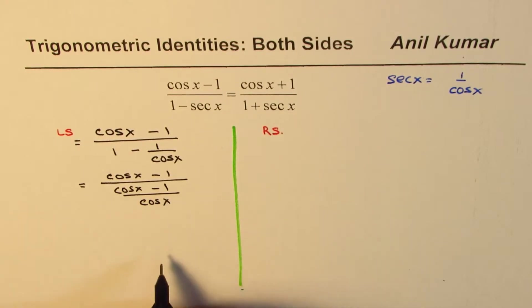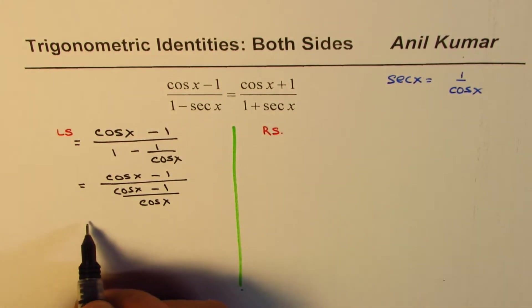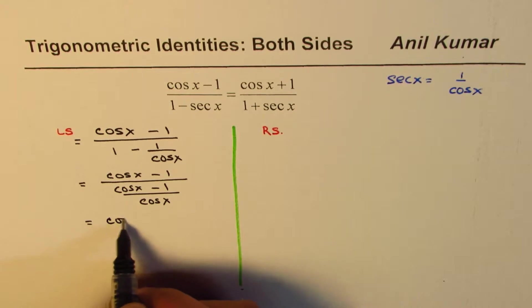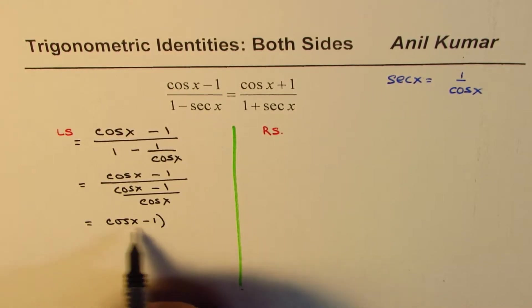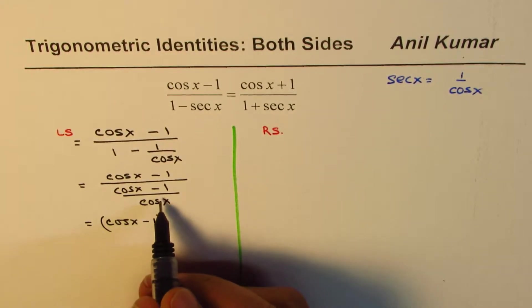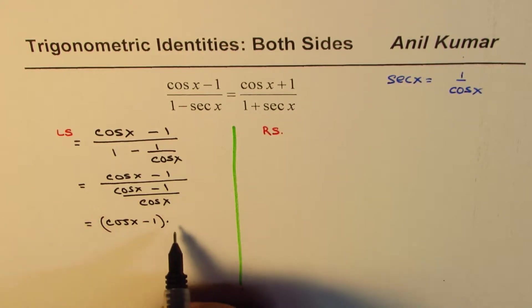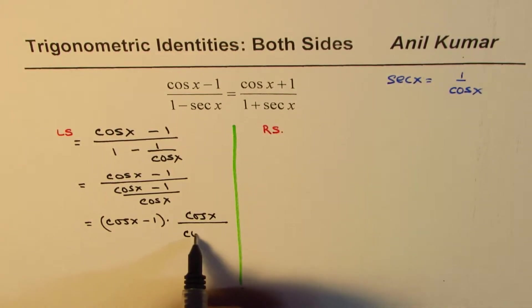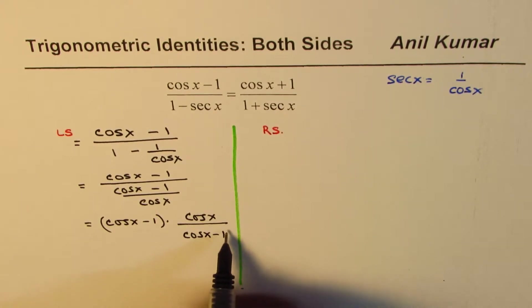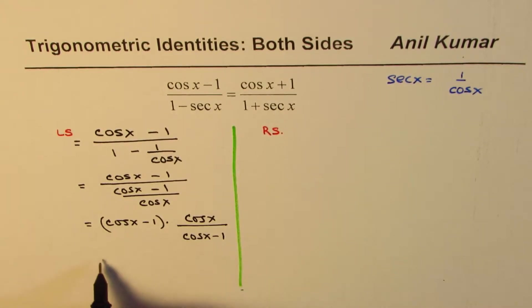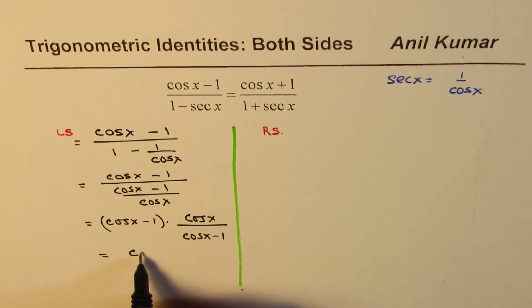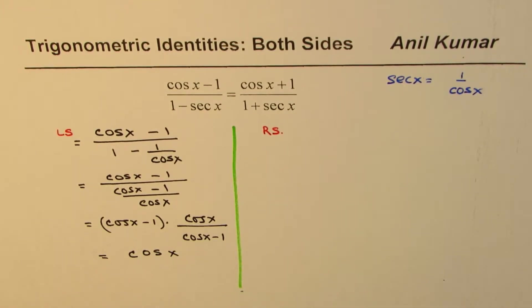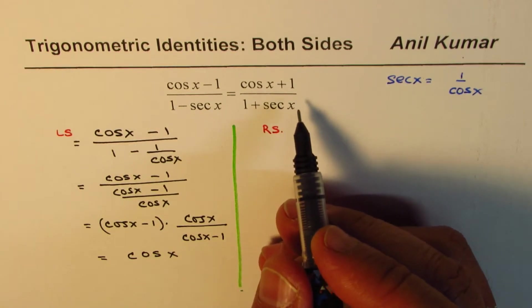At this stage, you could also write this as (cos x - 1) times - it's divided by this, so it flips - cos x/(cos x - 1). They get cancelled, and what you get here on the left side is cos x. Let's do the same operations on the right side.